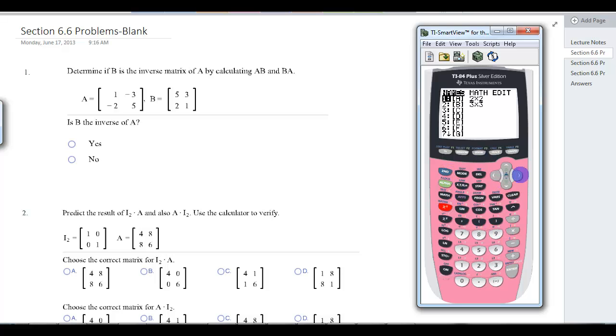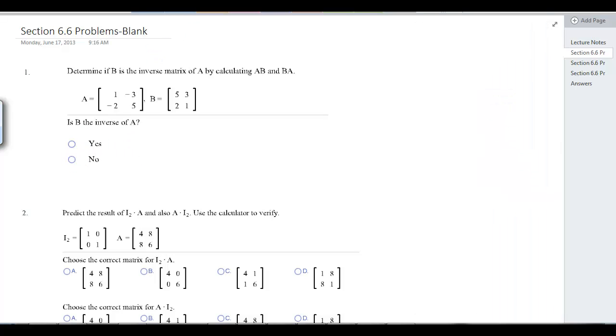Second matrix, over to edit, enter, 2 by 2. We got 1, negative 3, negative 2, 5, enter. So second quit. Now let's do second matrix, get A, and inverse, and enter. And we have negative 5, negative 3, negative 2, negative 1. So they're similar numbers, but those are negative. So this would be, no, that cannot be the inverse. It's not the inverse of that.